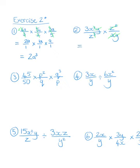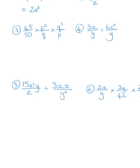I've got 3x left in the numerator and z in the denominator, and then 1 over 1 — so let's erase that, because 1 times anything keeps it the same.